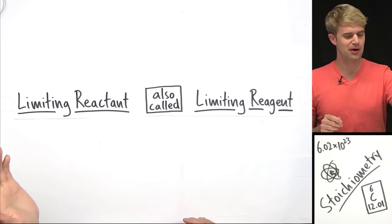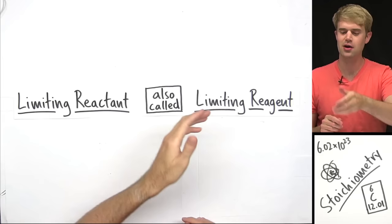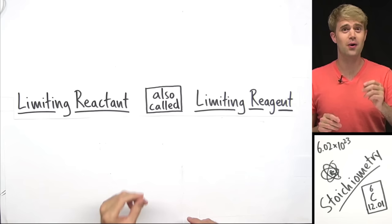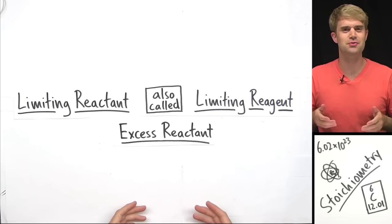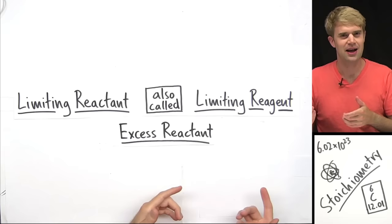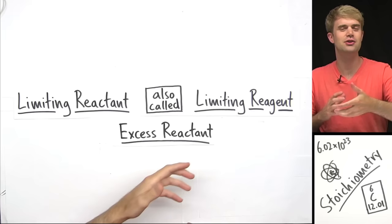In this video, we're going to talk about limiting reactant, which can also be called limiting reagent. Along the way, we'll also discuss a related topic called excess reactant. Limiting reactant and excess reactant all have to do with chemical reactions. But to explain it from the beginning, I don't want to start talking about the chemistry. Instead, I want to start talking about some analogies to cooking — we'll compare a chemical reaction to a cooking recipe.